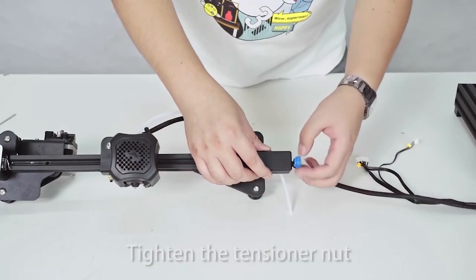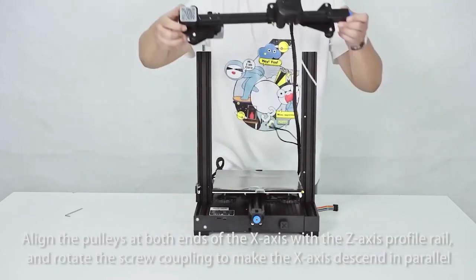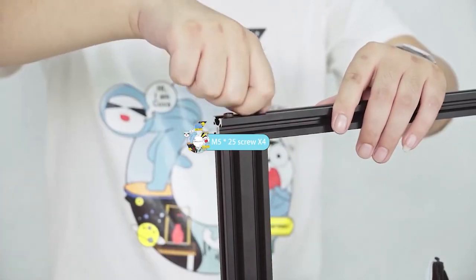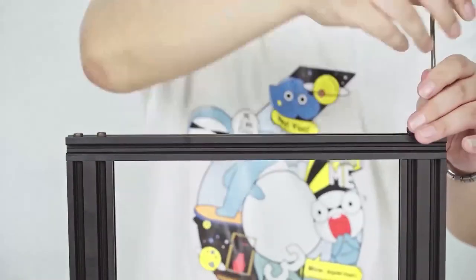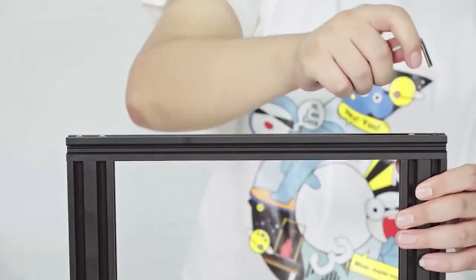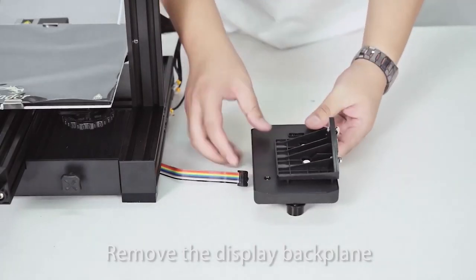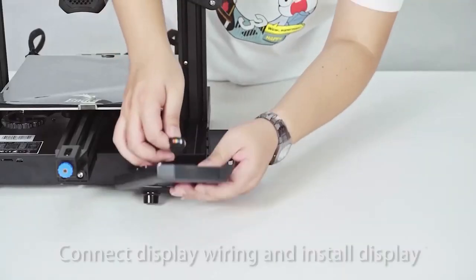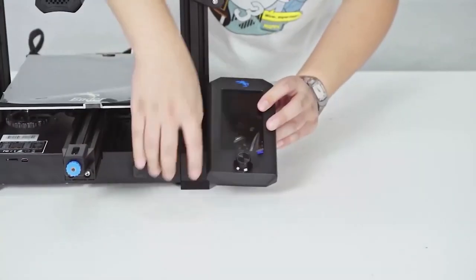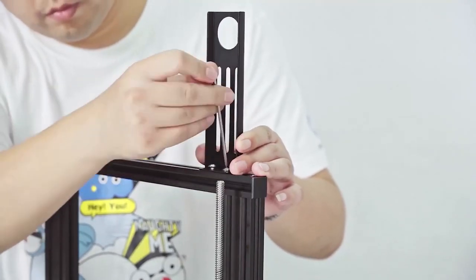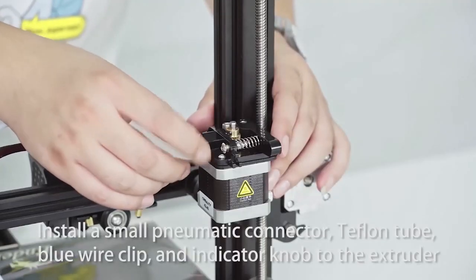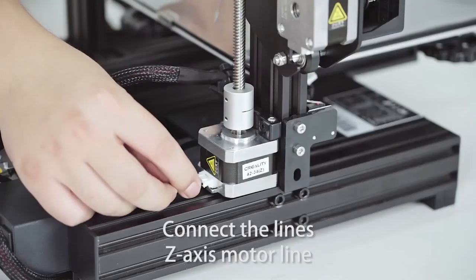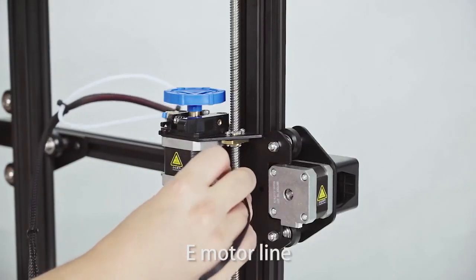Kurulumu yaptıktan sonra yapmanız gereken önemli şey tabii ki tabla ayarı dediğimiz bir olayımız var. Tabla ayarı aslında benzerlerinde olduğu gibi kafayı aşağı indiriyorsunuz. Her bir kenarda, bir, iki, üç ve dört kenarda olmak üzere kağıt ile nozzle ile tabla arasında o kağıdın hafiften giriyor olması ve çok hafif sürtüyor olması gerekiyor. Bu dört tarafa bu ayarı yapıyorsunuz. Bu ayarı üç dört kez yapmanız gerekiyor arkadaşlar. Tek sefer tutturamazsınız.